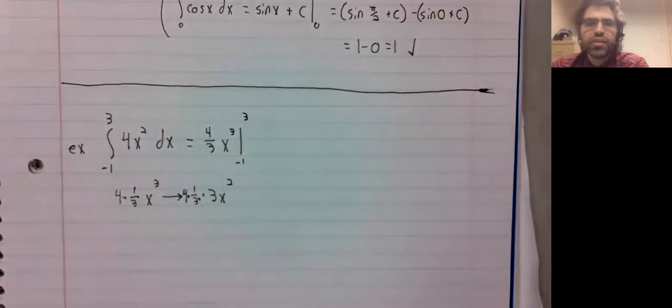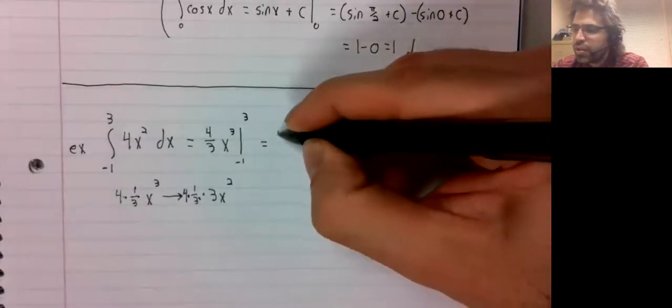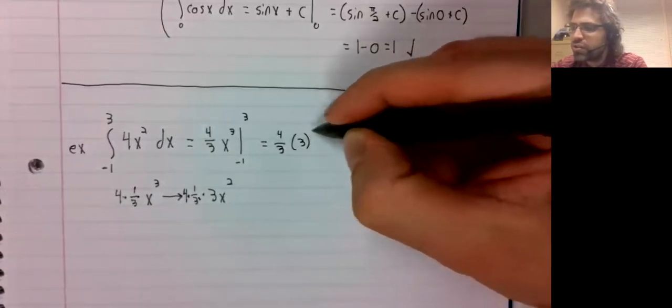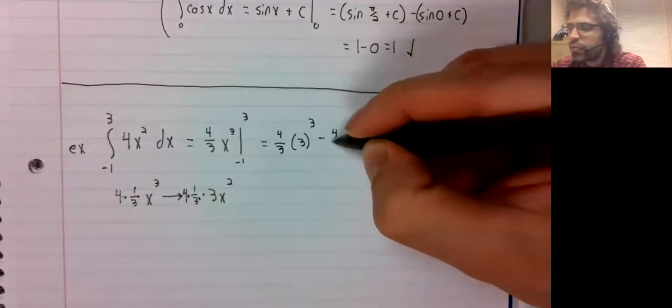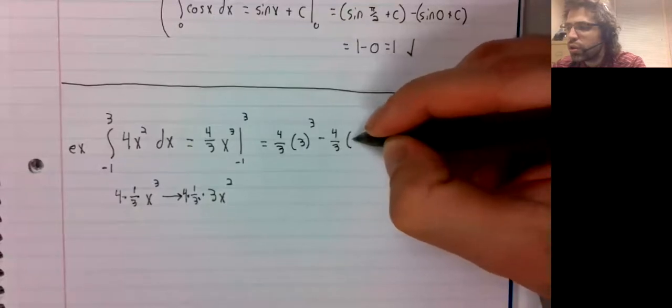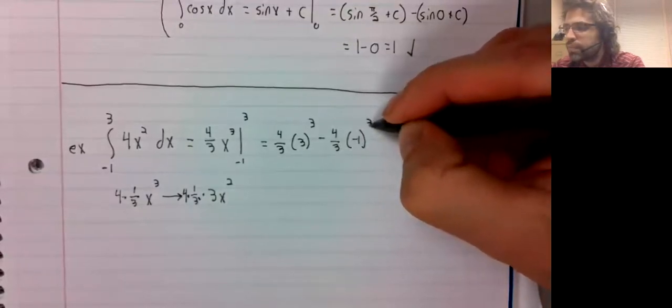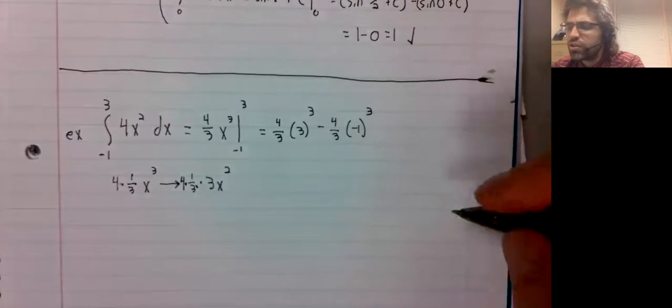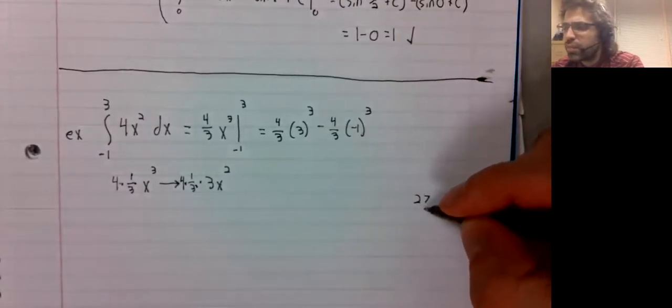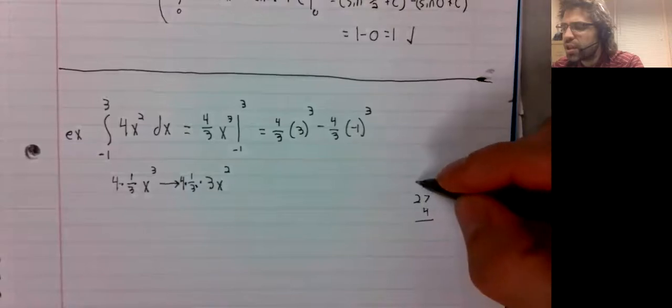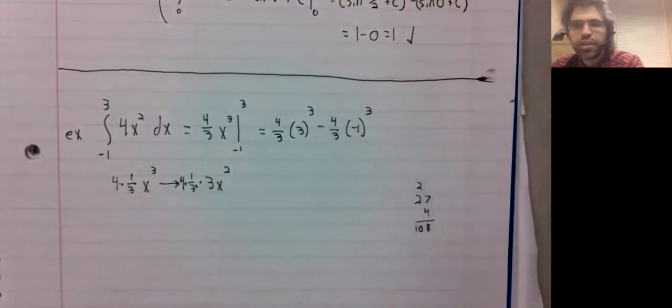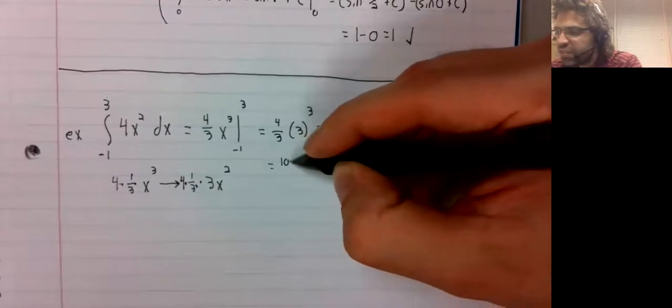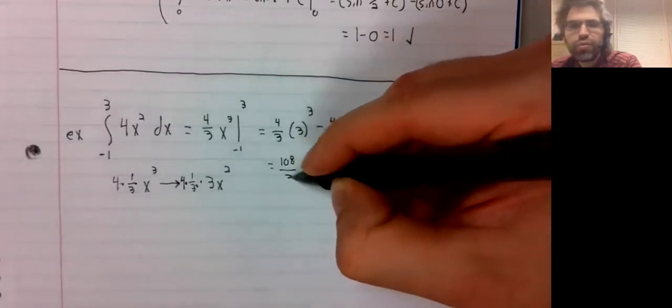Here's an antiderivative. Don't need to bother with that plus c as long as we're using the fundamental theorem. So let's see. Three cubed is 27. 27 times four is 108. So 108 over three.